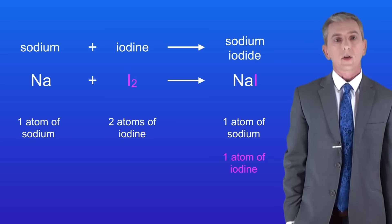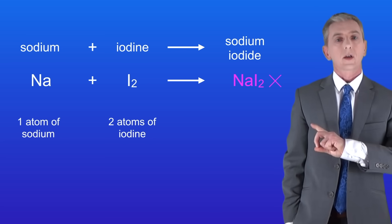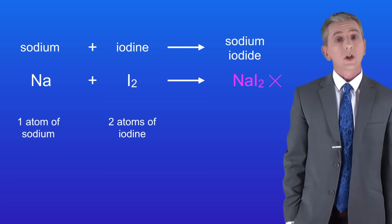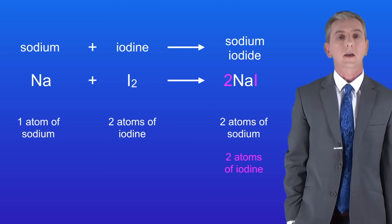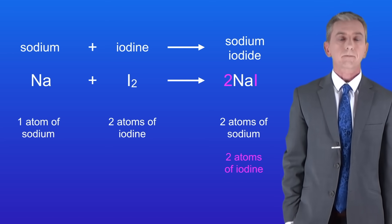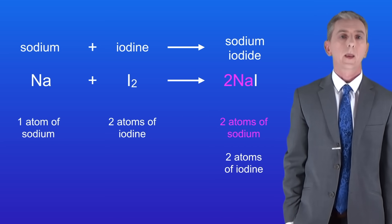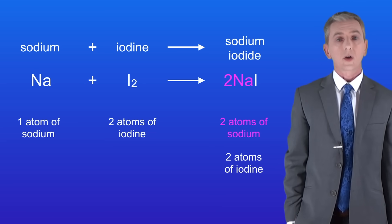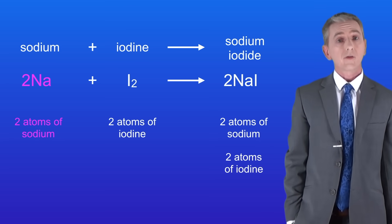We need to get one more atom of iodine on the right hand side. Remember that we cannot change small numbers, so that is not allowed. However we are allowed to use large numbers in front of a chemical. If I place a large two in front of the sodium iodide, I now have two atoms of iodine so the iodine is also balanced. However we've now got two atoms of sodium on the right hand side but only one sodium atom on the left hand side. We can fix that by putting a large two in front of the sodium, and now the entire equation is balanced.